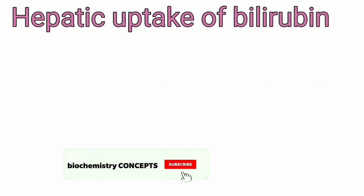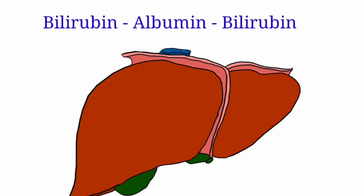Hepatic uptake of bilirubin. When the albumin-bilirubin complex reaches the sinusoidal surface of the liver, bilirubin is taken up by the hepatocytes. The uptake is an active process requiring energy and a carrier protein. Within the hepatocytes, bilirubin binds to a specific intracellular protein called ligandine. Binding of ligandine to bilirubin prevents the escape of bilirubin back into the circulation.